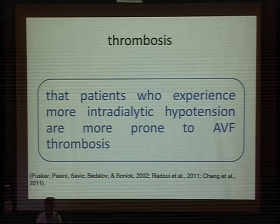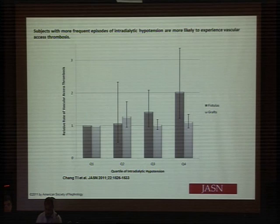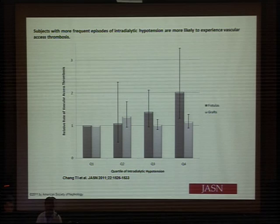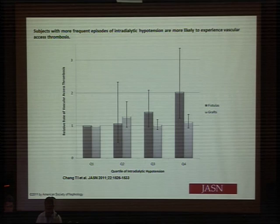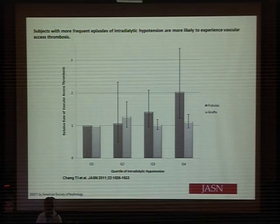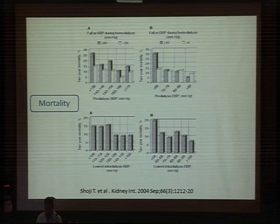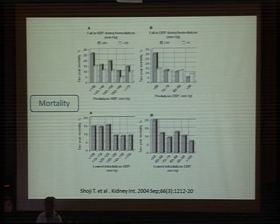As shown in a study published in 2011, patients were divided into four quartiles according to the degree of blood pressure decrease. Patients with increasing multi-level decreases in blood pressure had a higher rate of vascular complications. The mortality rate among hemodialysis patients with intra-dialytic hypotension increases when the blood pressure drop exceeds 40 mmHg, or more than 10 mmHg.